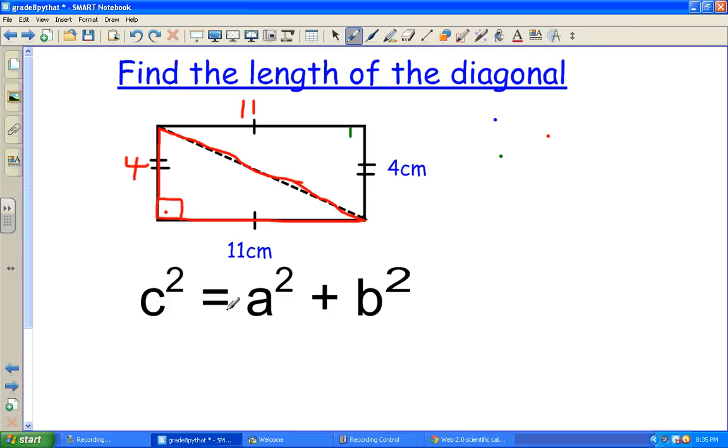Now that it's a right triangle, we can use our theorem, Pythagorean's theorem. So let's put in the ones we know. Well, going straight across, the hypotenuse is right here. So this is C.